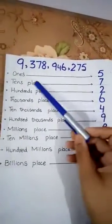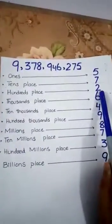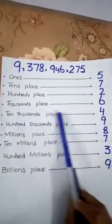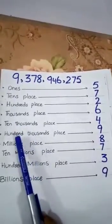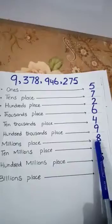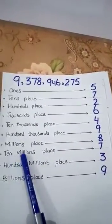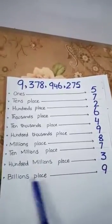For example, if we have a number: 5 stands for 1's, 7 stands for 10's, 2 stands for 100's, 6 stands for 1,000's, 4 stands for 10,000's, 9 stands for 100,000's, 8 stands for millions, 7 stands for 10 millions, 3 stands for 100 millions, and 9 stands for billions.